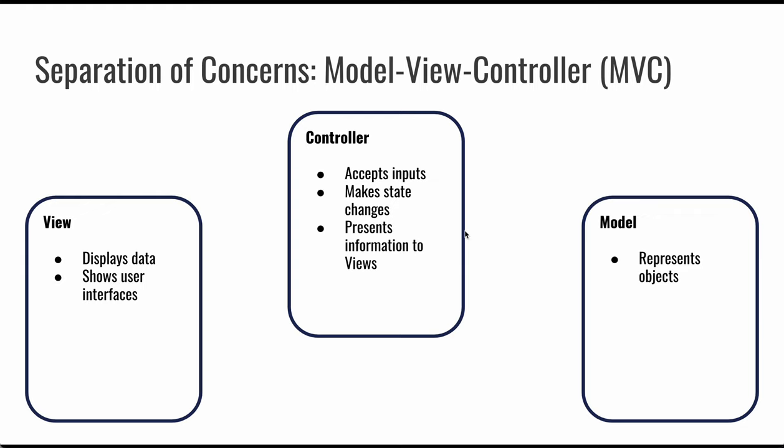Your view is going to be responsible for showing the user interface and displaying data. It will take input and send that to the controller. The controller accepts that input, processes and validates it, makes any state changes necessary, and presents that information to views. It works with both the view and the model to handle what data we're storing and how we want to send that — but the controller is not actually in the business of doing anything to show data. It's just sending that data back to the view so it can be displayed. And the model really just represents your objects and where we put those.